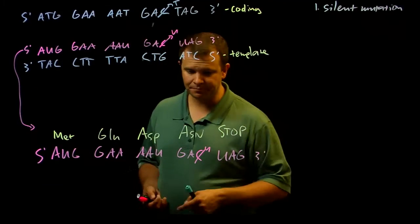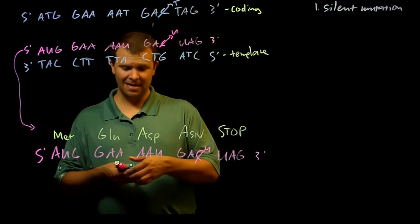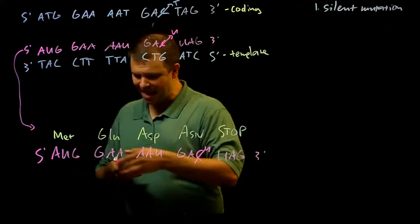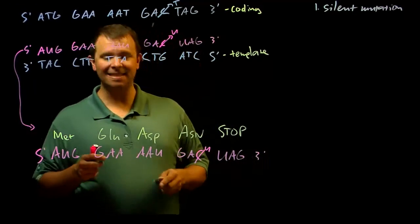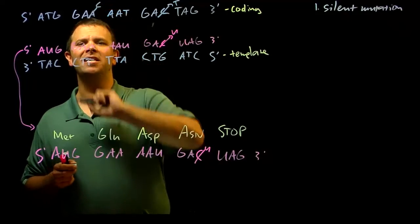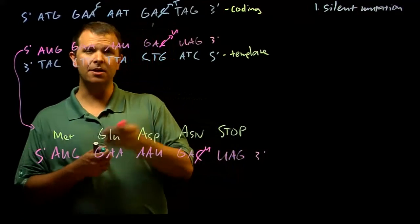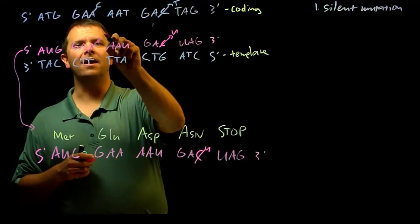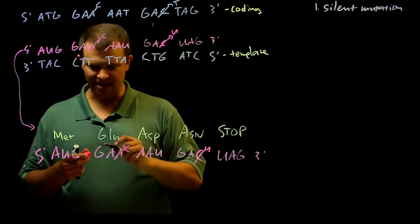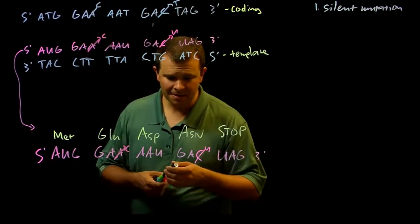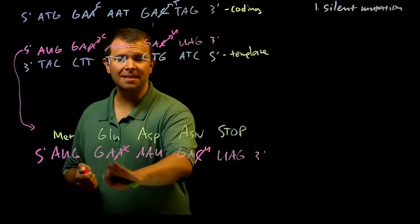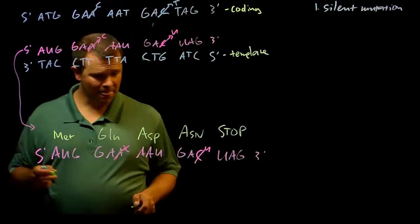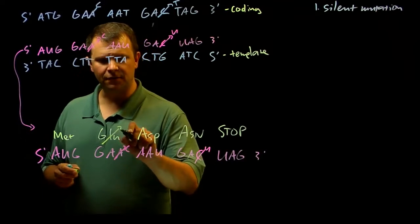Second, if I were to take GAA and instead change that to GAC, the RNA also changes to GAC, but GAC does not code for glutamate, it codes for aspartate.